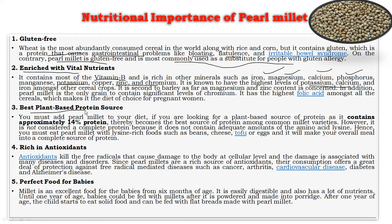Third, pearl millet is the best plant protein source. You should add pearl millet to your diet if you are looking for plant-based protein, as it contains approximately 14 percent protein and is the best protein source among common millet varieties. It is also rich in antioxidant properties, killing free radicals that cause cellular damage associated with many diseases. Additionally, millet is a perfect food for babies from six months of age — it is easily digestible and nutrient-rich. Until one year of age, babies can be fed powdered millet porridge; after one year, children can eat flat breads made with pearl millet.